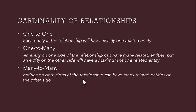Cardinality of relationships — there are three cardinalities of relationship between two entities. The first one is one-to-one. In one-to-one, each entity in the relationship will have exactly one related entity. In one-to-many, an entity on one side of the relationship can have many related entities, but an entity on the other side will have a maximum of one related entity.